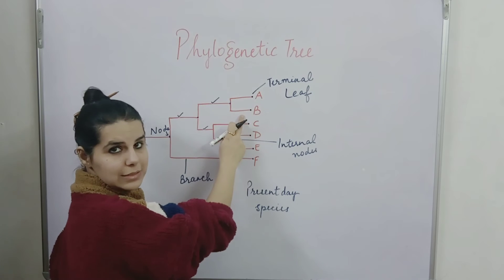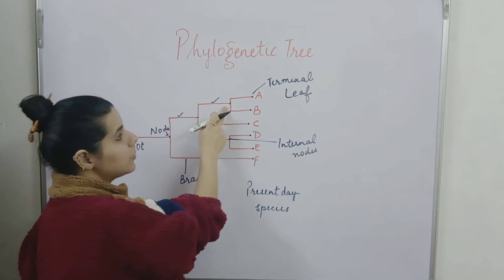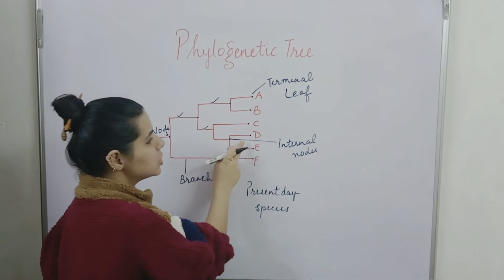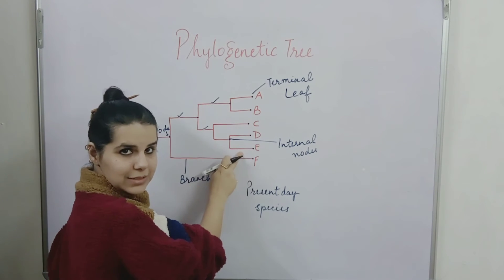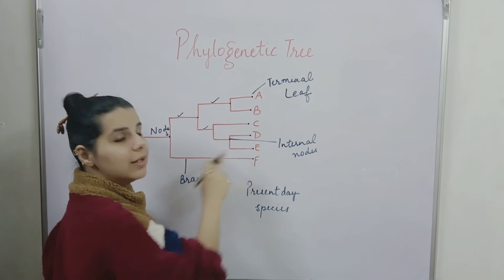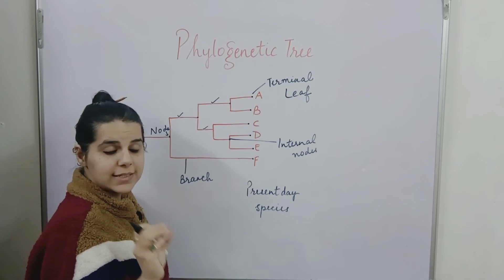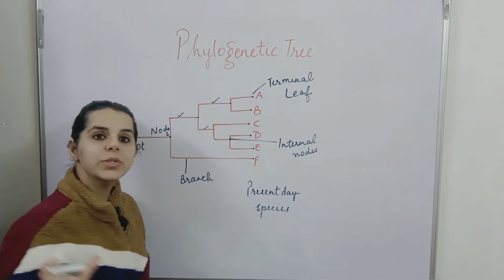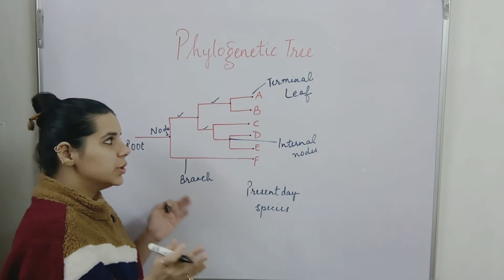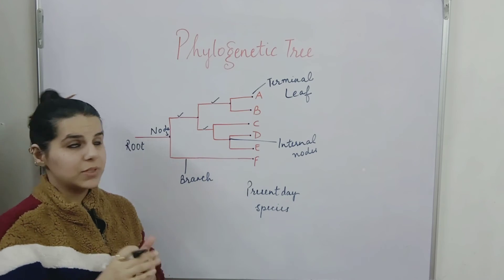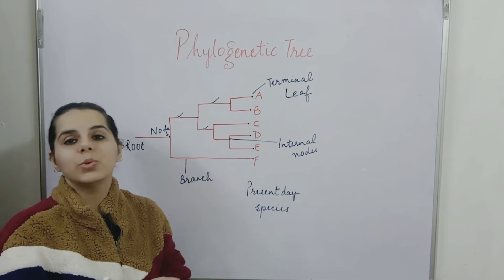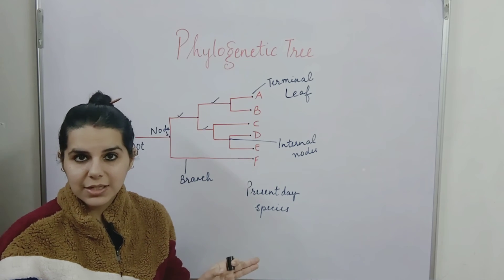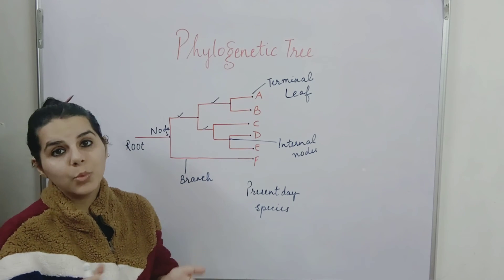Two species — consider species A and species B — are closely related because their branching node is near to each other. Similarly, species D and species E are closely related. But species A and species E are distantly related in terms of evolution. The smaller the distance between the two branching nodes, the more closely related the species are.